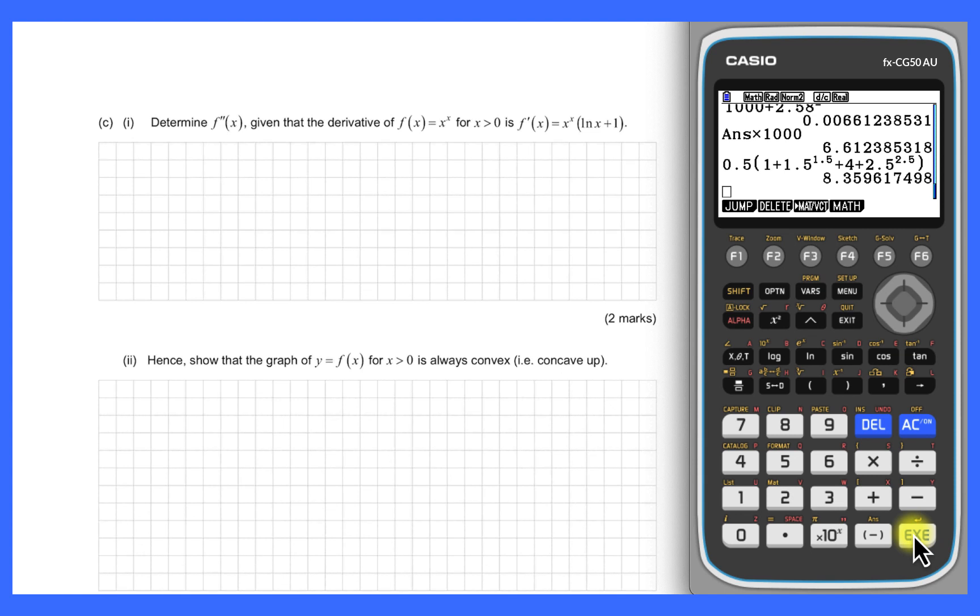Now we're asked to look at the second derivative of this function. But interestingly, we don't normally know how to differentiate this, but we're given the first derivative. So we want to differentiate the first derivative. F dash x is x to the x by ln x plus 1, and we're going to use product rule. The first part of product rule is differentiate x to the x, which we wouldn't normally know how to do, but we are given that same expression, so it's going to be x to the x by ln x plus 1.